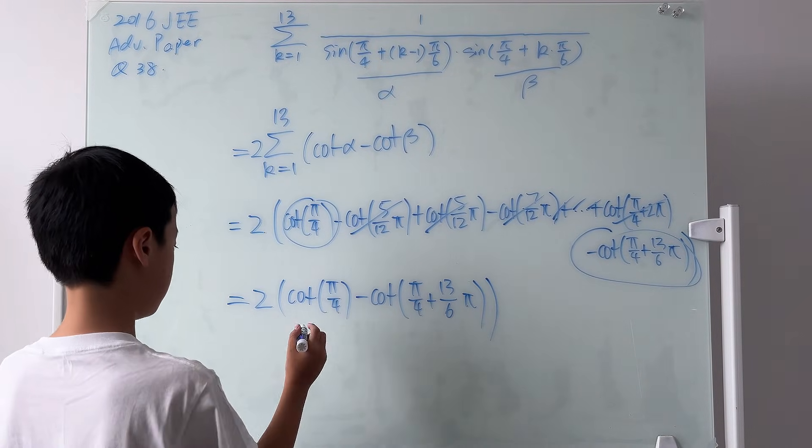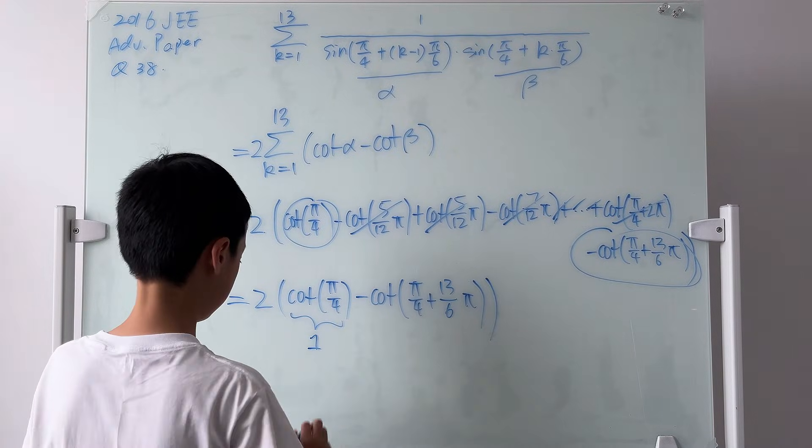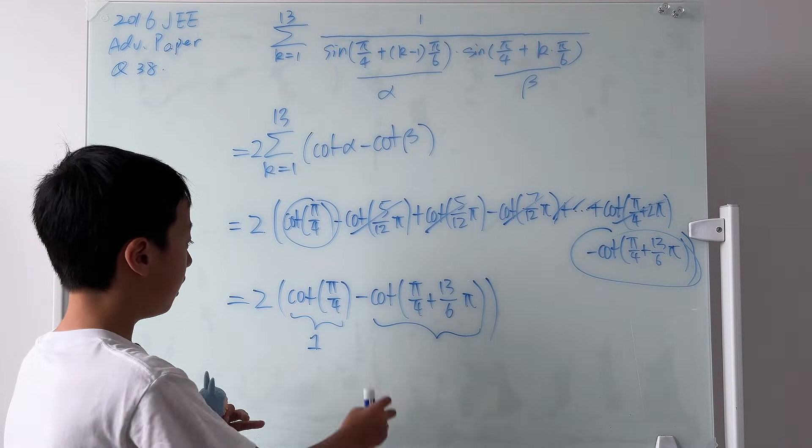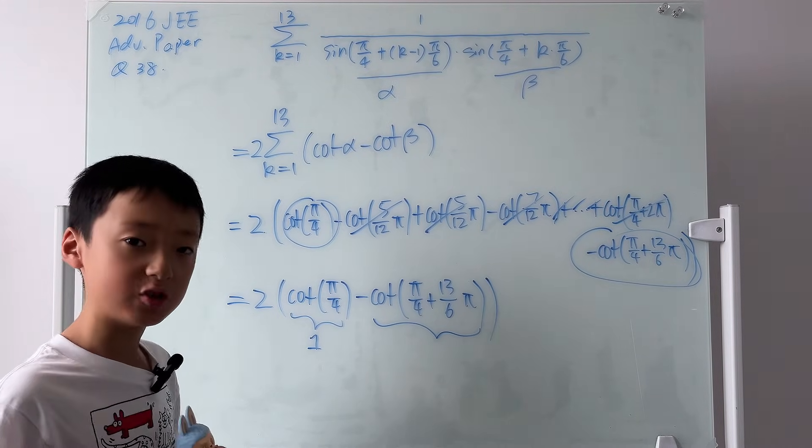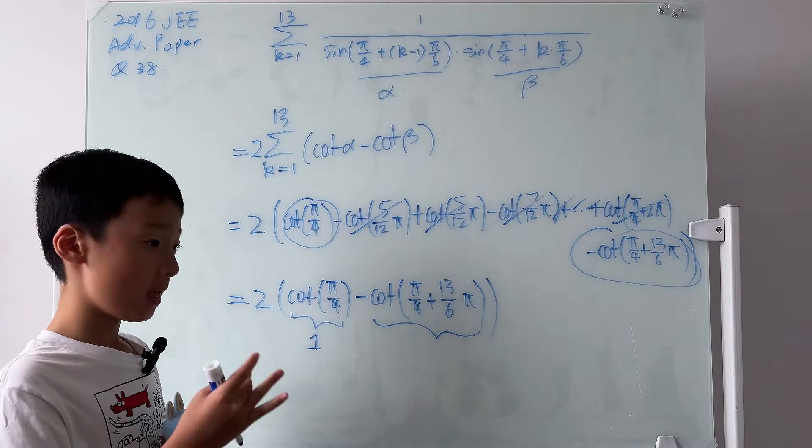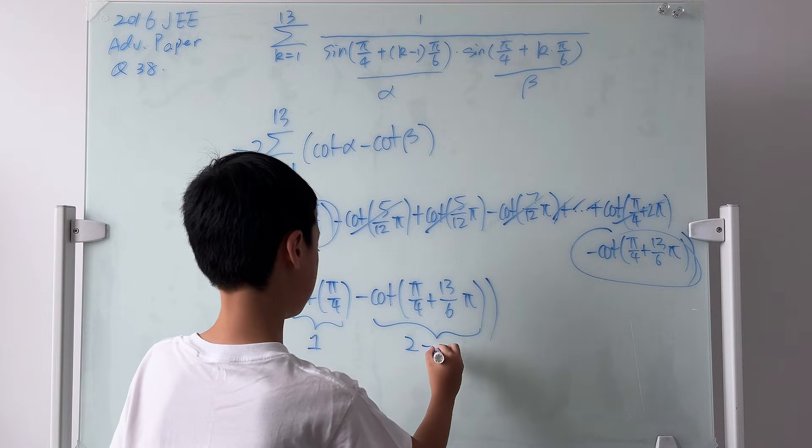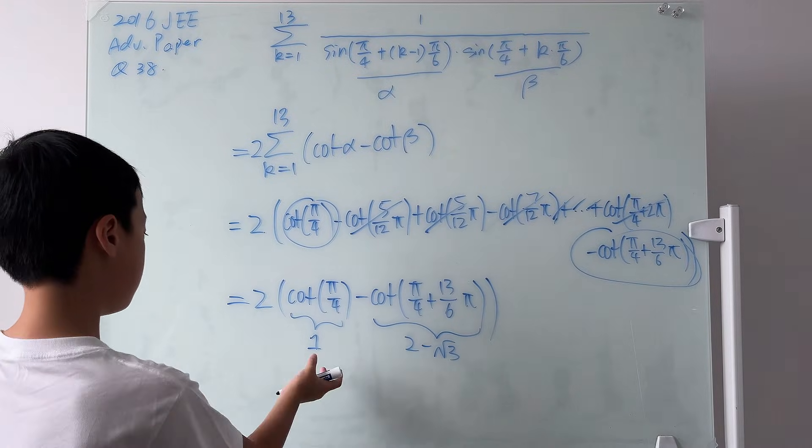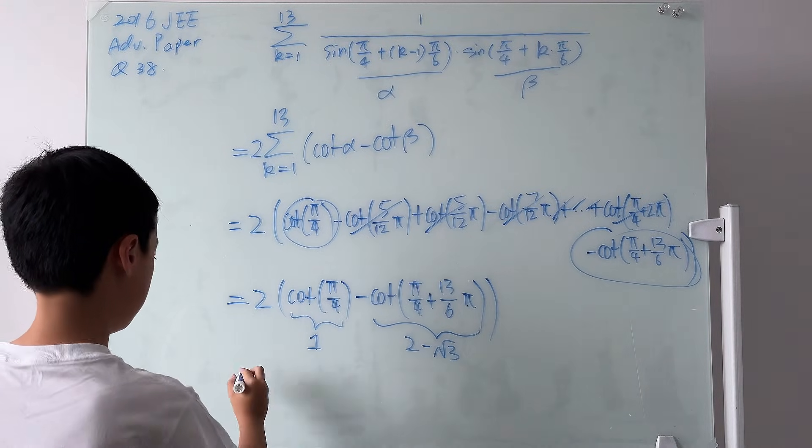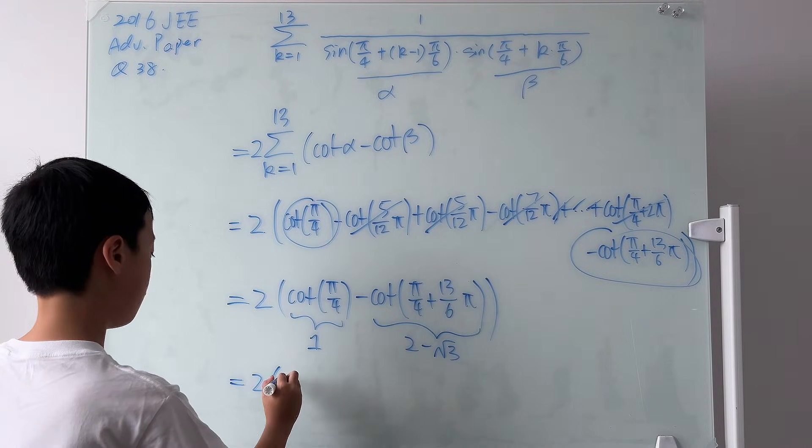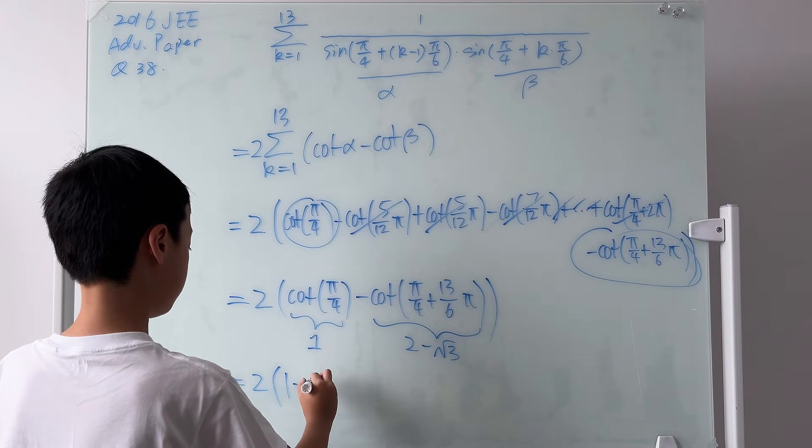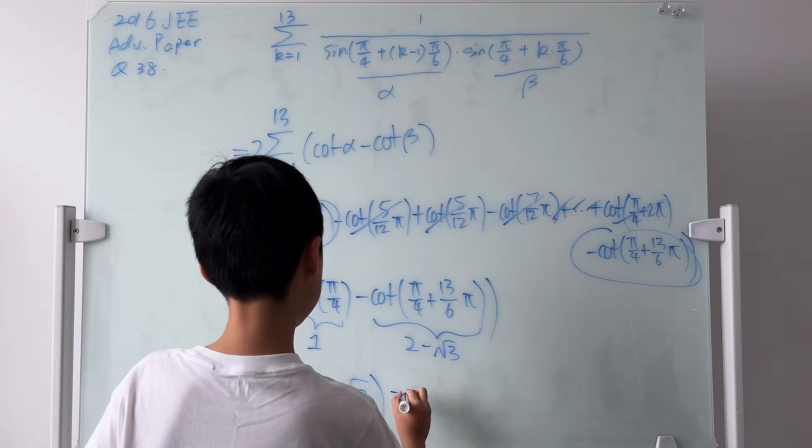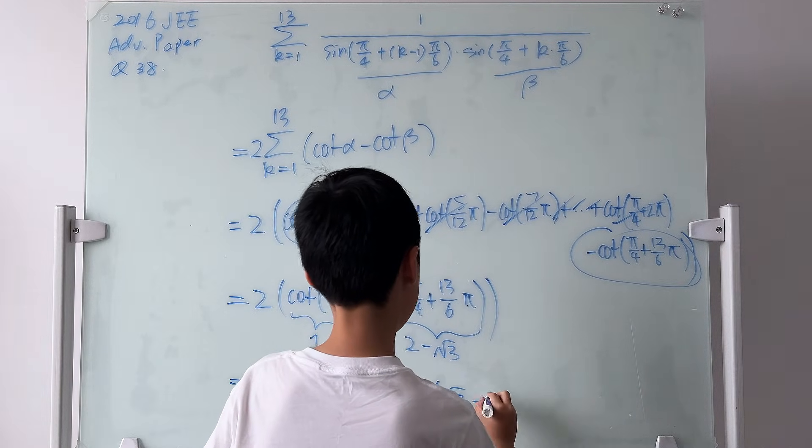Now we will figure this out first. This is simply just 1. And for this, we have a simple angle sum identity for cotangent, and I'm just going to tell you the answer. It is 2 minus square root of 3. So these are all the ingredients that we need to plug all of this in. So it's equal to 2 times 1 minus this, so it's 1 minus 2 plus square root of 3 now. And this is equal to 2 times square root of 3 minus 1.